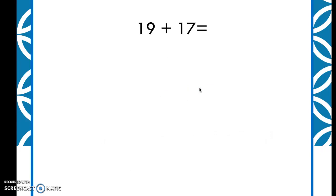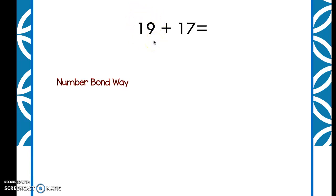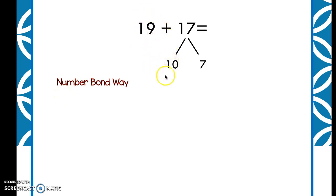So we did this problem yesterday: 19 plus 17. We're going to do it two different ways — the number bond way and the arrow way. Watch me solve this problem. When I'm adding these two numbers, I'm looking for a number that's close to a 10 to make a friendly number. 19 is really close to 20, so I'm going to break apart 17 to get 19 closer to a friendly number. I'll break it apart into 10 and 7, and rewrite this with new number sentences. We're going to do 19 plus 10 — 10 is a friendly number — and that equals 29.